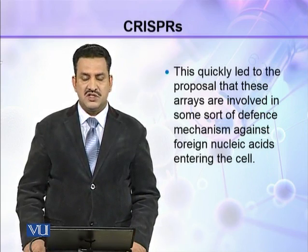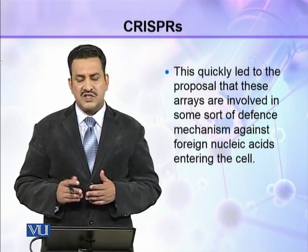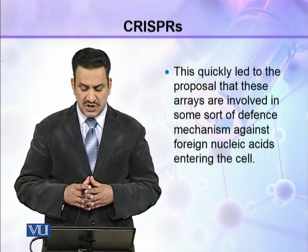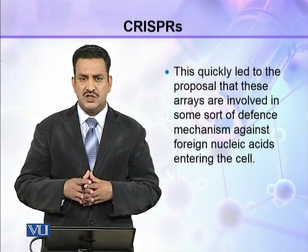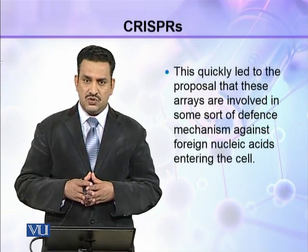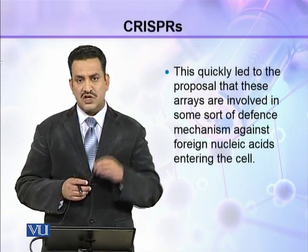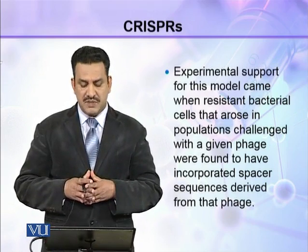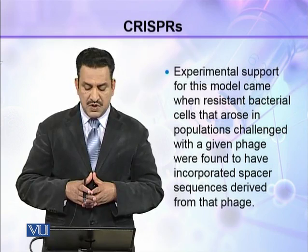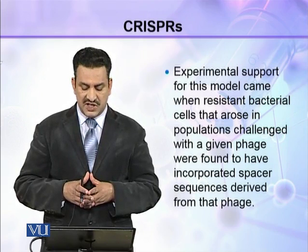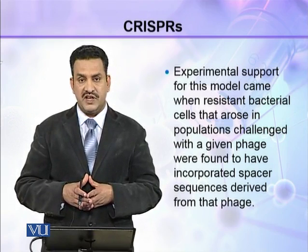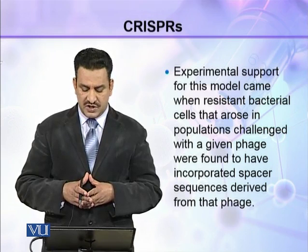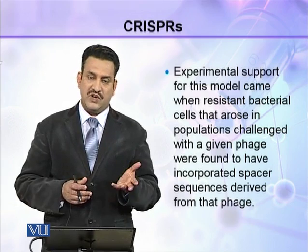This quickly led to the proposal that CRISPR arrays are involved in some sort of defense mechanism against foreign nucleic acid entering the cell. Experimental support for this model came when resistant bacterial cells that arose in populations challenged with a given phage were found to have incorporated spacer sequences derived from that phage.